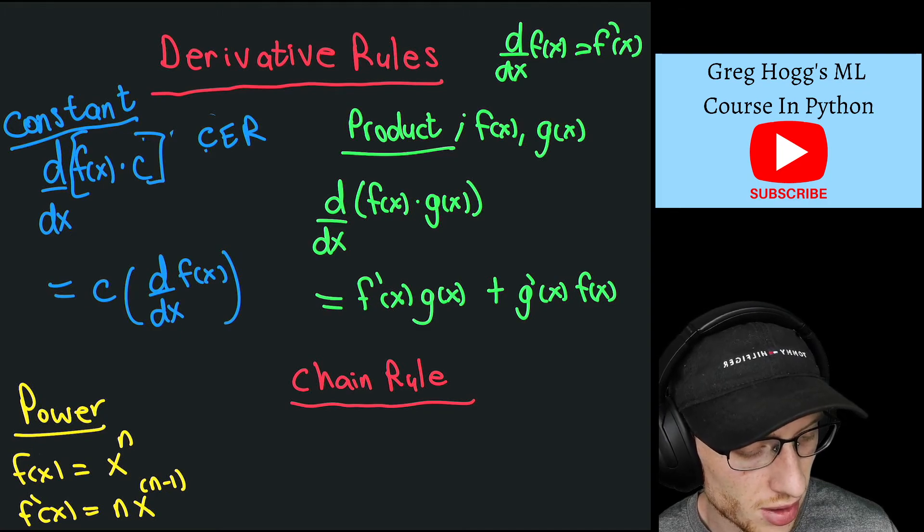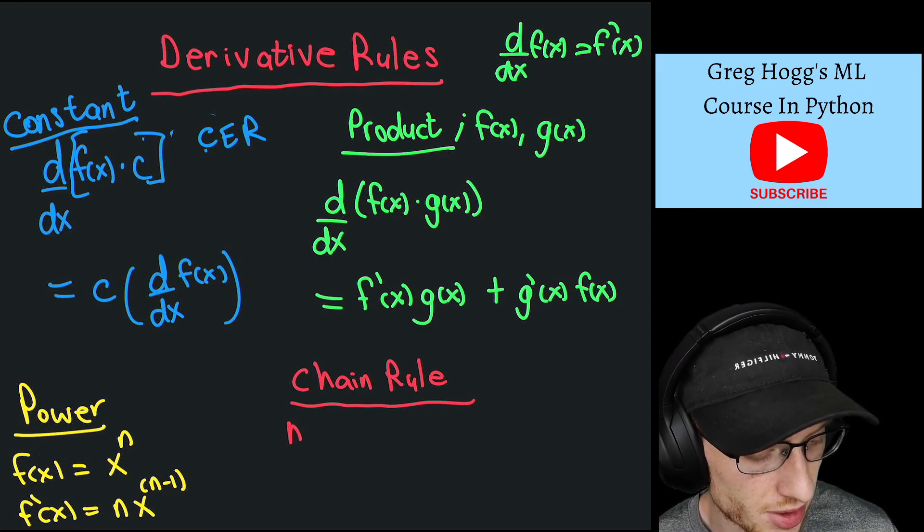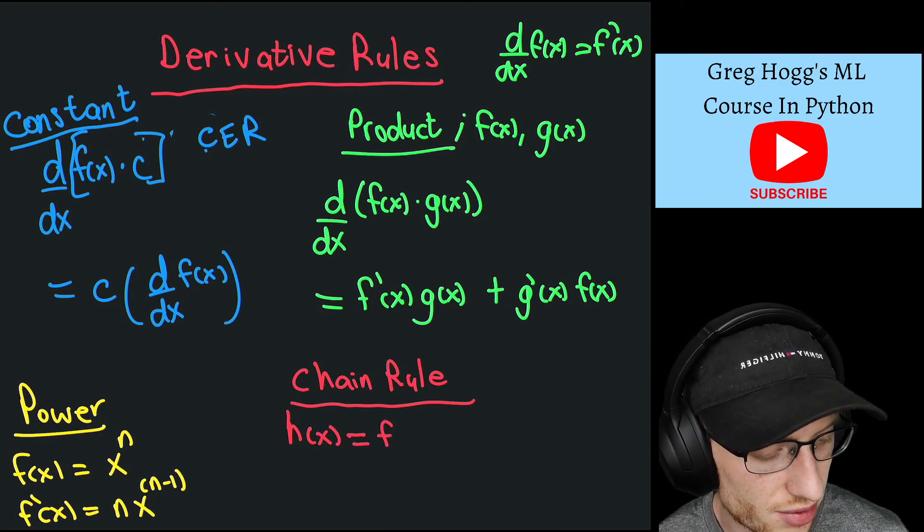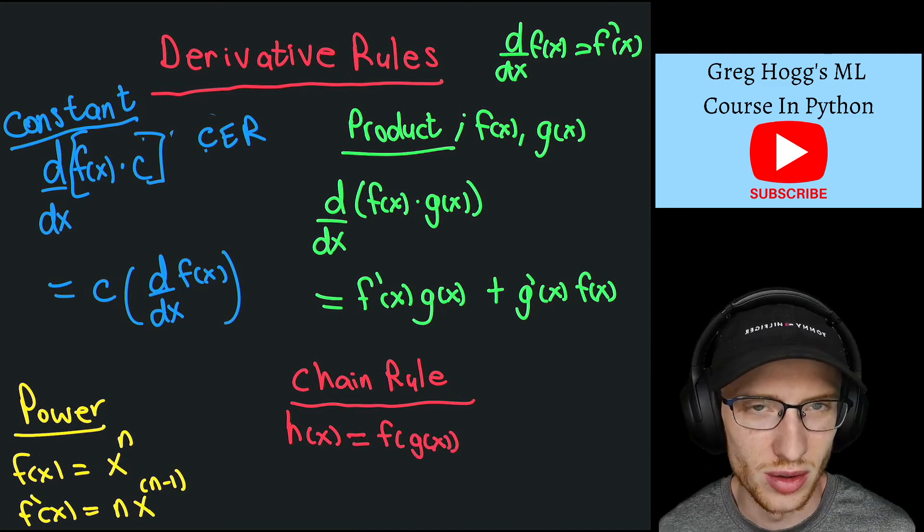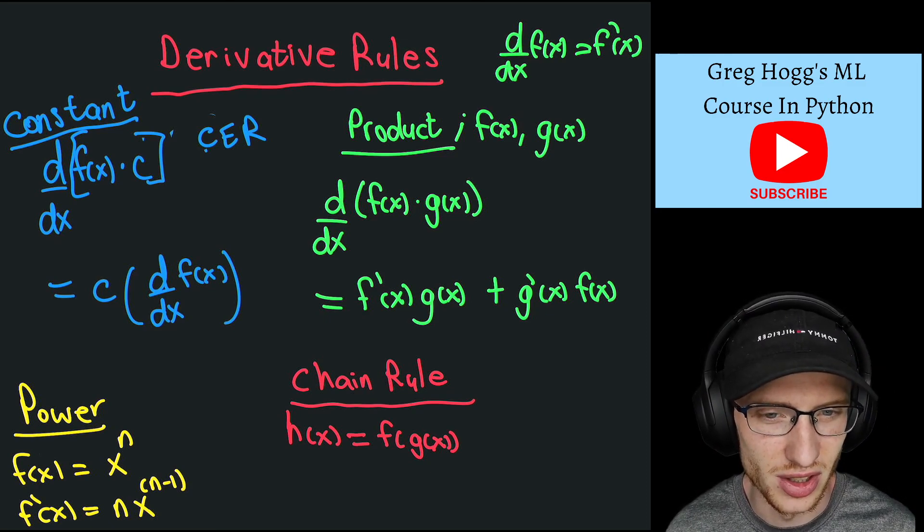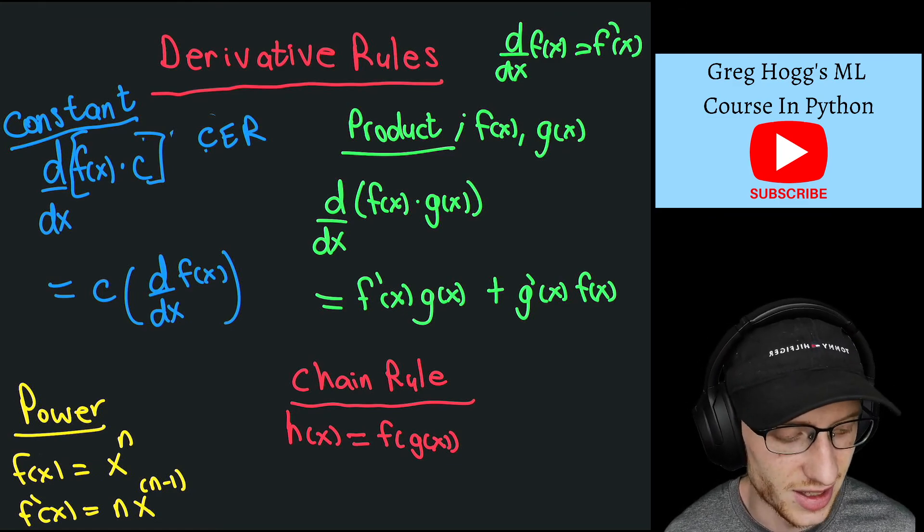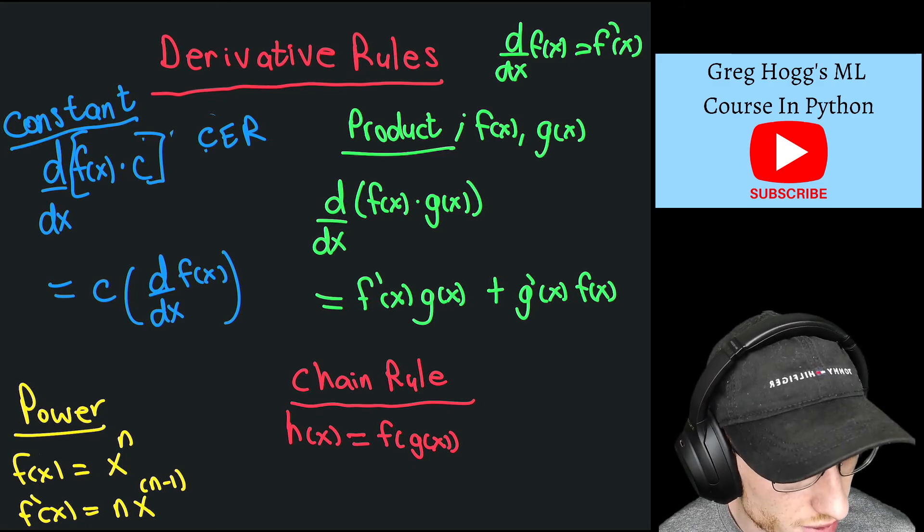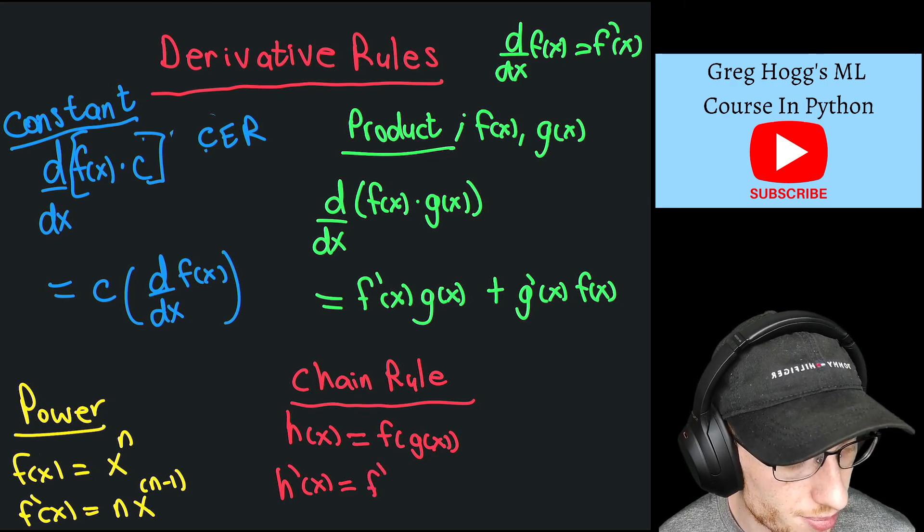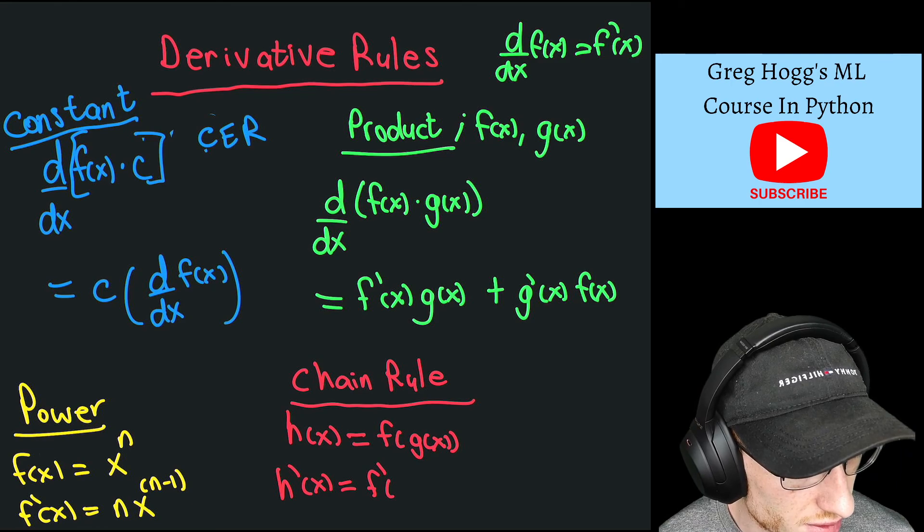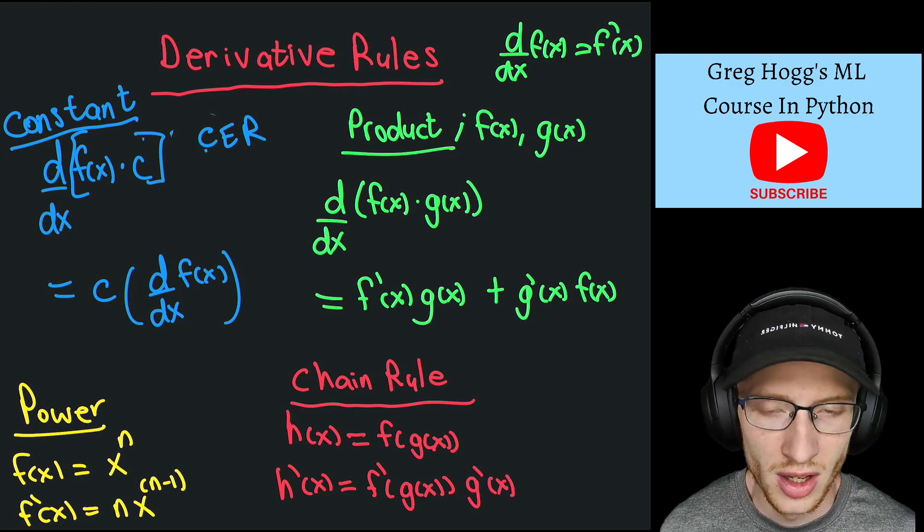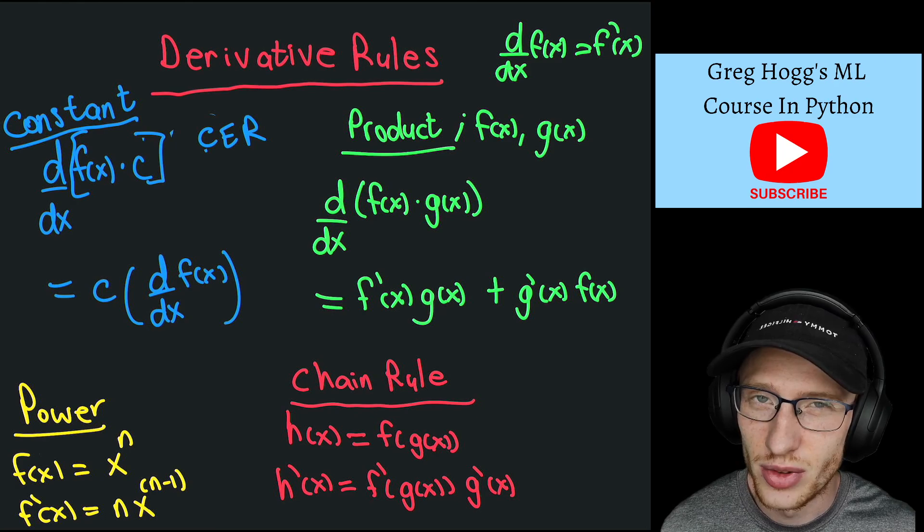If you have h(x) = f(g(x)), which means you insert g(x) into f as the argument, then h'(x) = f'(g(x))·g'(x). It's the derivative of f at g(x), times the derivative of g(x). I'll show examples in the next video, so I'll see you then.